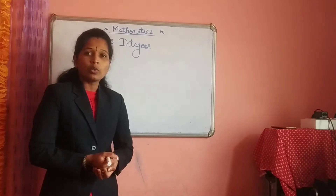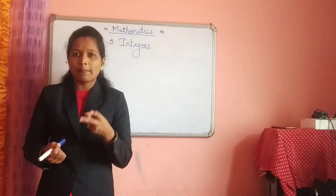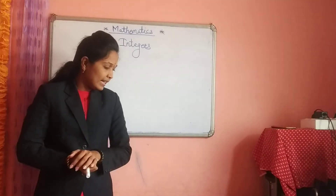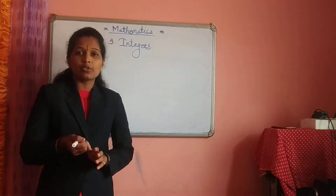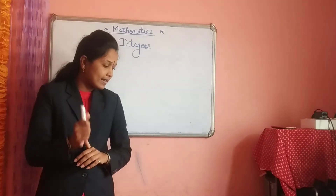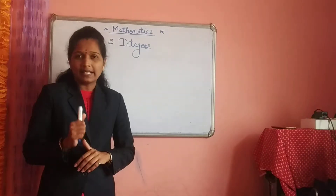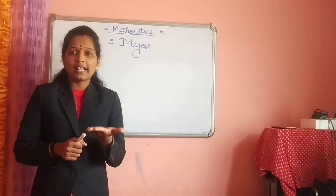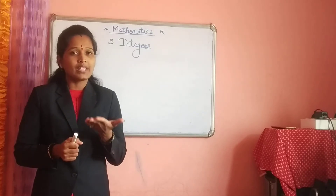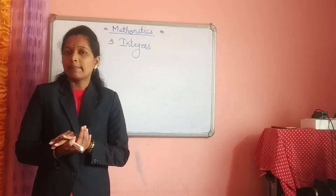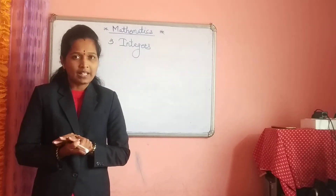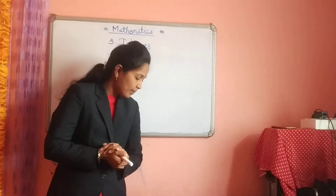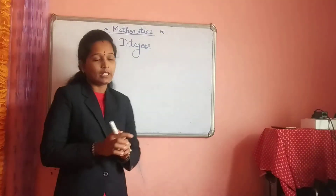Today we are going to learn our next topic: opposite numbers and comparing integers. It means today we are taking practice set 6 and practice set 7. It's a very easy topic. And in our next video we will see subtraction of integers, which means we can complete our chapter.